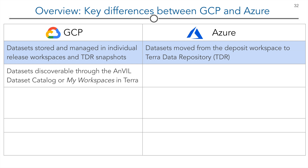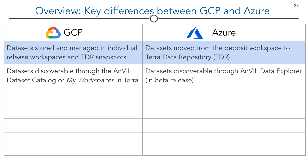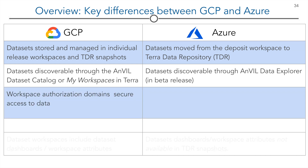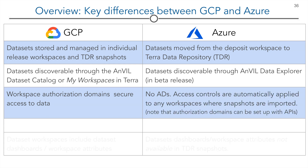On GCP, datasets are discoverable using the Anvil dataset catalogue. On Azure, data will be more visible and findable through the Anvil data explorer. Access control of data in GCP was managed using workspace authorization domains. On Azure, deposit workspaces will not have authorization domains. Once in TDR, access controls are assigned to the dataset and snapshots, and follow the data as it moves to other locations. For example, cloning a snapshot in a workspace assigns the data control requirements to the workspace. Deposit workspaces are a temporary holder for data only, with a simplified folder hierarchy structure and data model.